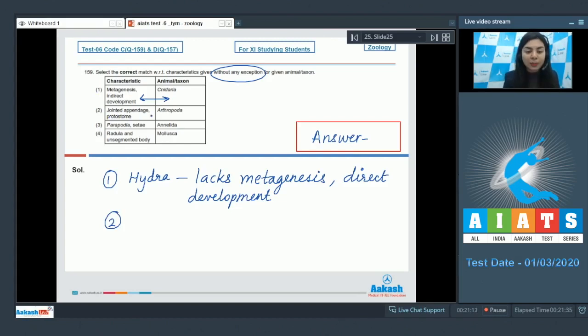Option 2: Jointed appendage and protostomes with respect to arthropods. This is the right answer. Arthropods have jointed appendages for locomotion and they are protostomic. Protostome meaning that the blastopore develops into mouth, whereas in deuterostomes, the blastopore develops into anus. So this is the right option.